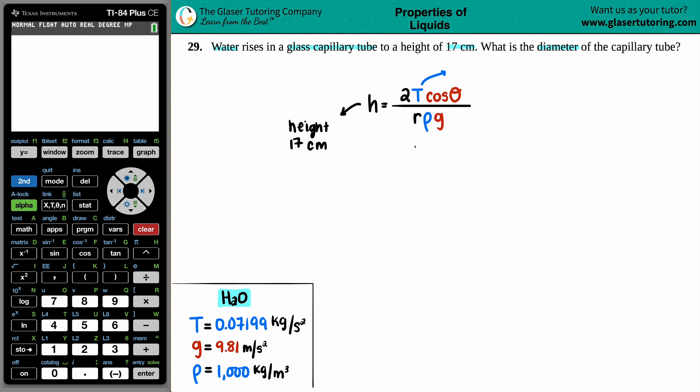This formula is more physics based, not really chemistry based. That's why you're going to start seeing variables and units that are standard for physics. Capital T is surface tension, and this is standard for what substance you're using. In this case, we're dealing with water, so I looked up what the surface tension for water was: 0.07199 kilograms per second squared.